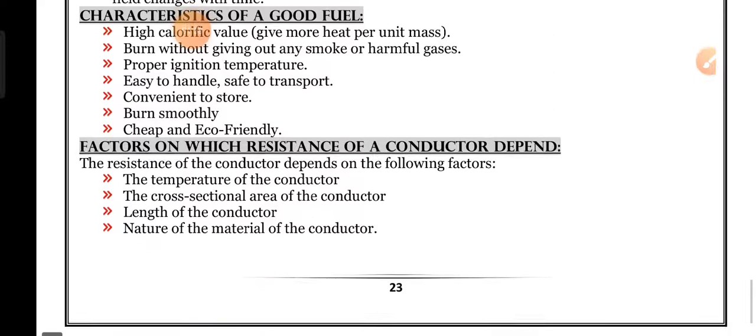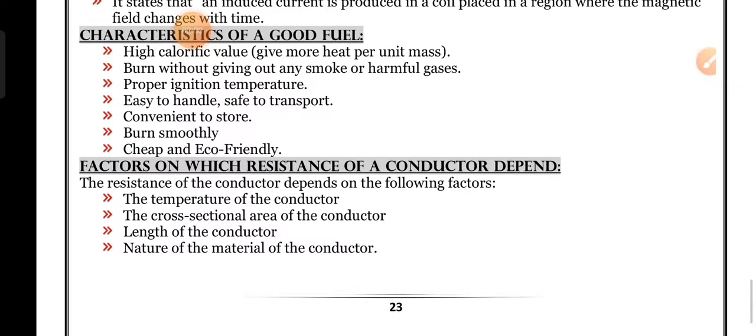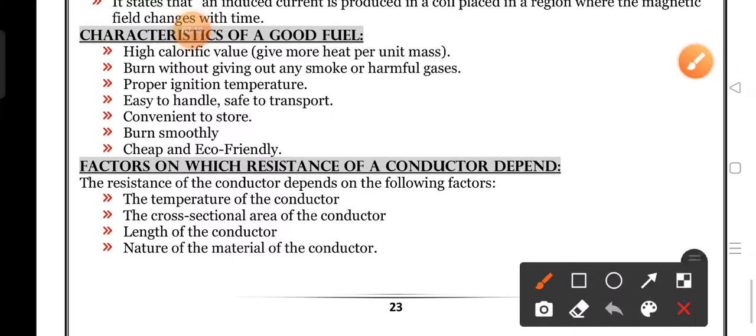Factors on which resistance of a conductor depends. The resistance of a conductor depends on the following factors: First one is the length of the conductor. Second one is cross-sectional area of the conductor. Third one, nature of the material of the conductor. And last one, temperature of the conductor. If a temperature is very high, then the conductivity of a conductor is very less.